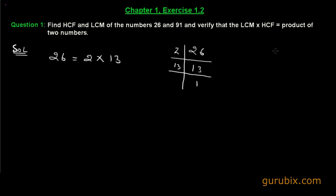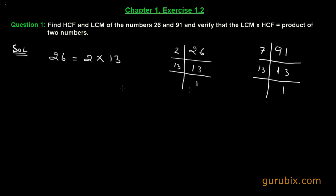Now we have 91. We also factorize 91 into its primes. We can divide it by 7 and we get 13, and 13 is also a prime number, so it cannot be factorized anymore. We can write 91 as 7 × 13.